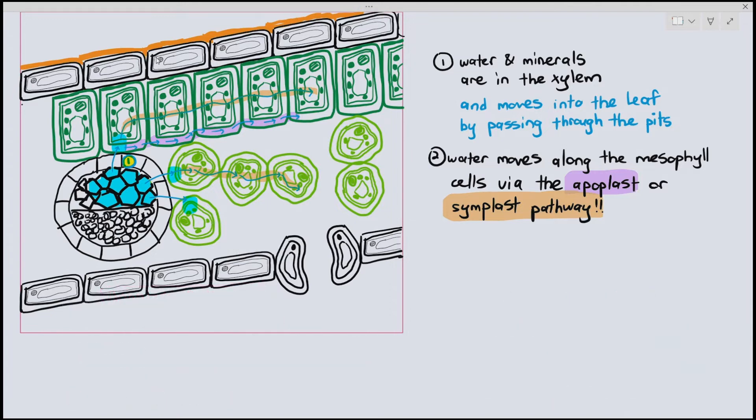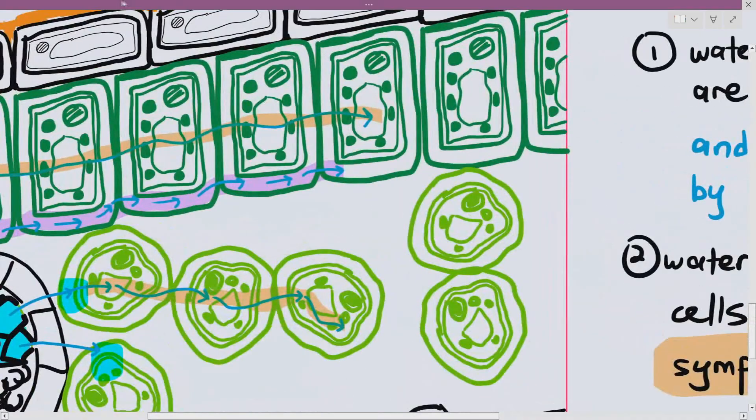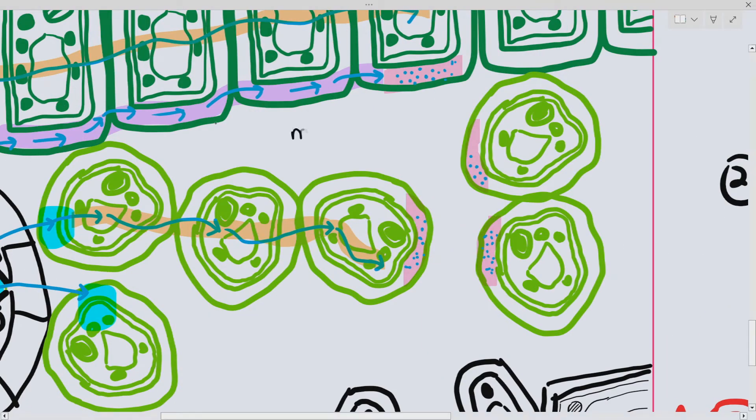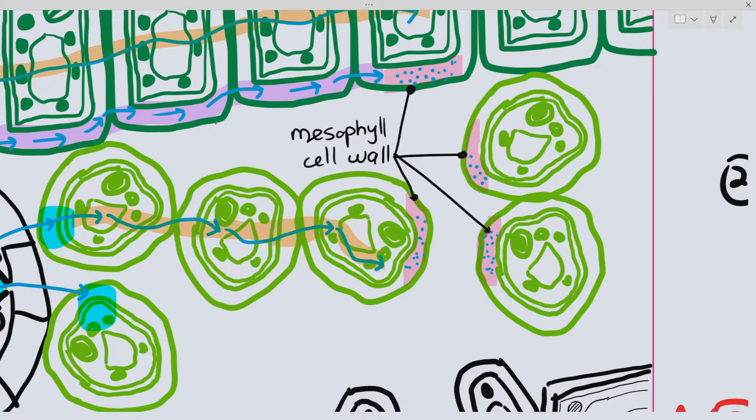Once the water and minerals move through the mesophyll cells, now here's where something very important happens. Notice that I'm actually drawing out blue colored dots in the mesophyll cell wall. This part is very important. Mesophyll cell wall. When the water molecules are in the mesophyll cell wall, if the temperature is adequate enough, it will break the hydrogen bonds connecting the water molecules together.